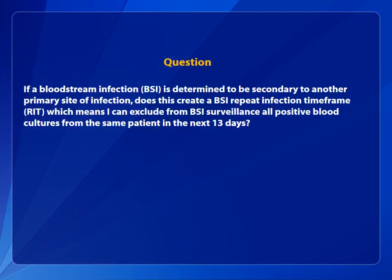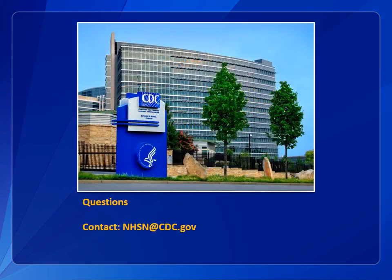Returning to our original question: if a BSI is determined to be secondary to another primary site of infection, does this create a BSI RIT, meaning all positive blood cultures from the same patient can be excluded from BSI surveillance during the next 13 days? The answer is no — a secondary BSI does not create a BSI RIT for all subsequent positive blood cultures. The concepts covered in this quick learn apply to HAI and POA determinations. This concludes the NHSN Quick Learn focusing on BSIs and RITs. For additional questions, please contact NHSN user support at nhsn@cdc.gov.